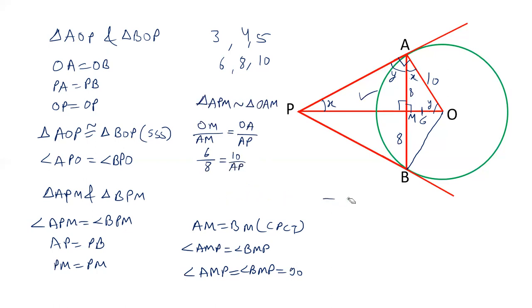Now cross multiplication and that will give you AP is equal to 8 into 10, 80 by 6. That is 40 by 3. So length of AP is 40 by 3.